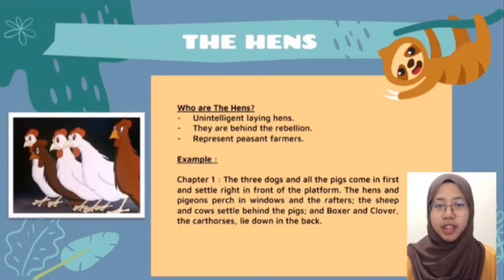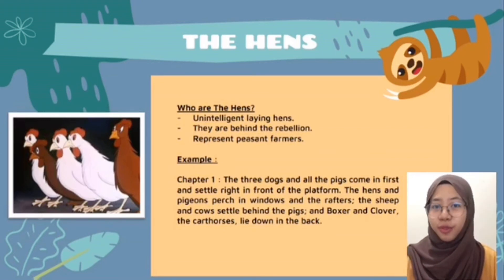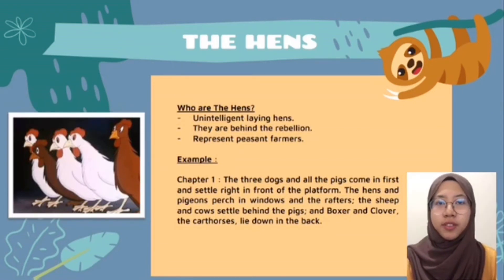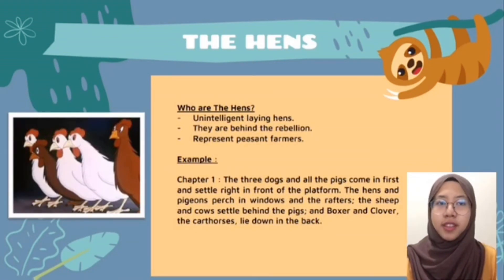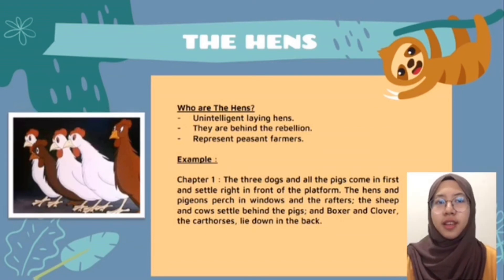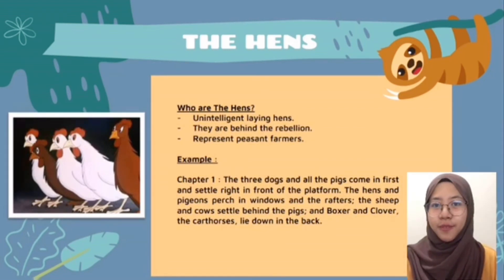The hens need other animals to stand together and come up with opinions as one. For example, in Chapter 1, the three dogs and all the pigs come in first and settle in front of the platform. The hens and pigeons perch in the windows and the rafters, the sheep and cows settle behind the pigs, and Boxer and Clover lie down in the back. This is the same in other chapters — they will always be together with other animals and will never be alone, because they know that alone, nothing will ever work.